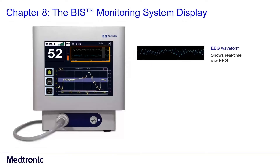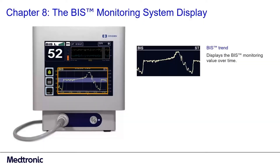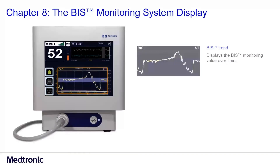The EEG waveform is the real-time raw EEG data used to create the BIS value. The BIS trend plots and displays the BIS monitoring value from the start of monitoring until the end of monitoring.